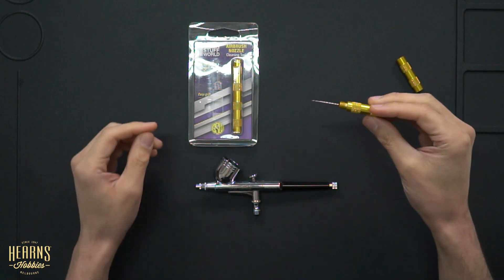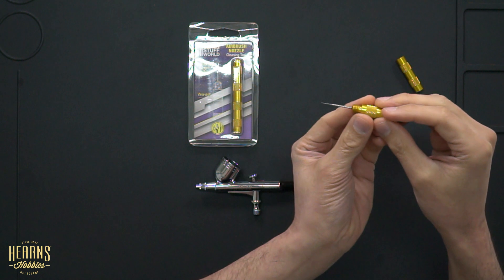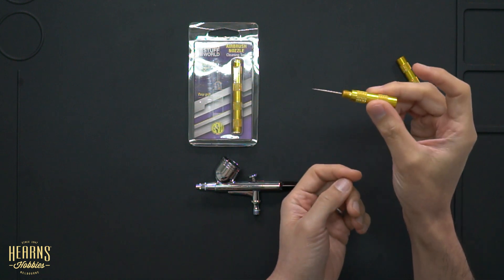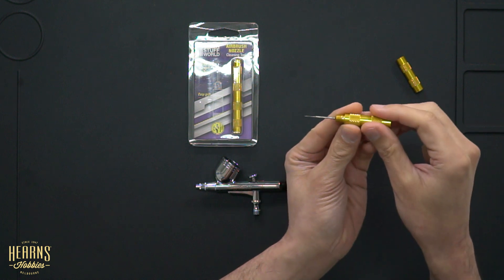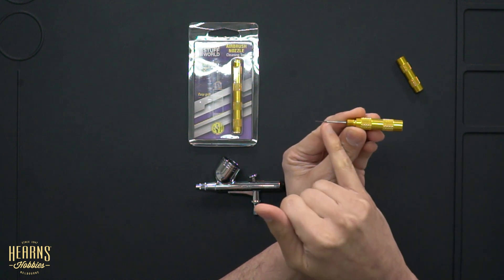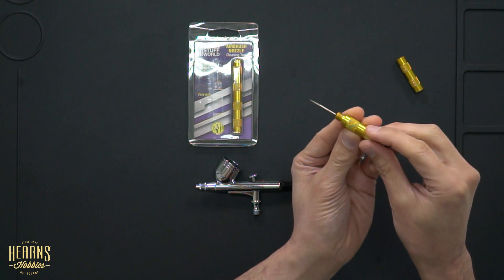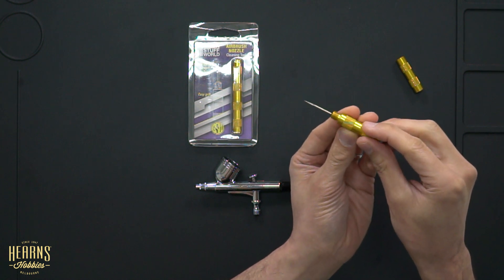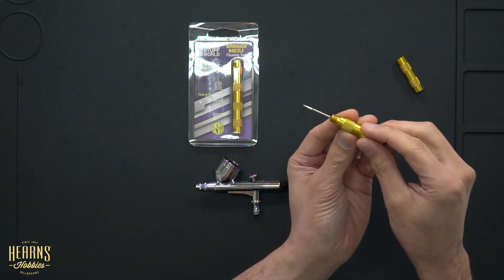The nozzle cleaner is designed for cleaning out the nozzles of your airbrush. What we have here is a brass colored handle with what appears to be the end of an airbrush needle on it, but it's been machined on this end. You can just see there's a flat on there. That's going to help ream out anything that's stuck within your nozzle.